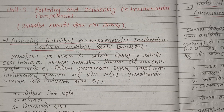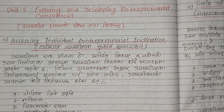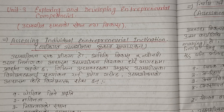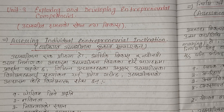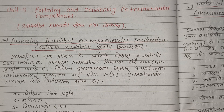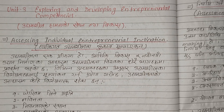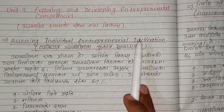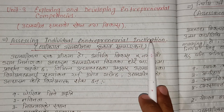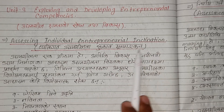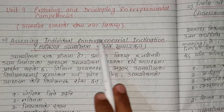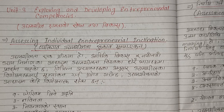The second topic is Assessing Individual Entrepreneur Inclination. In English, it is called Assessing Individual Entrepreneur Inclination. This involves a set of fixed questions about the right things to assess entrepreneurial traits.